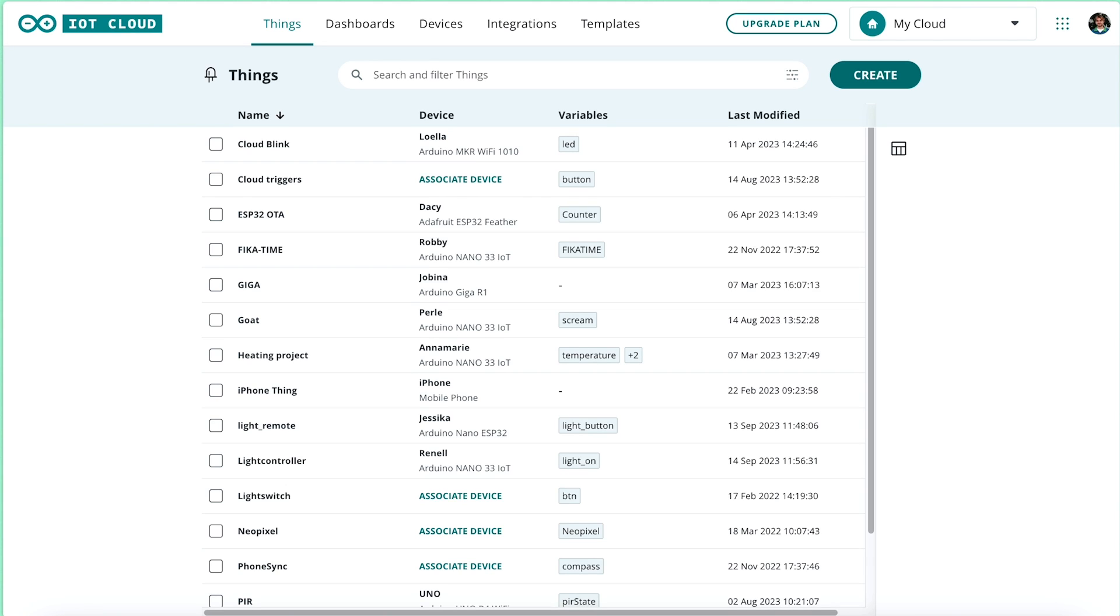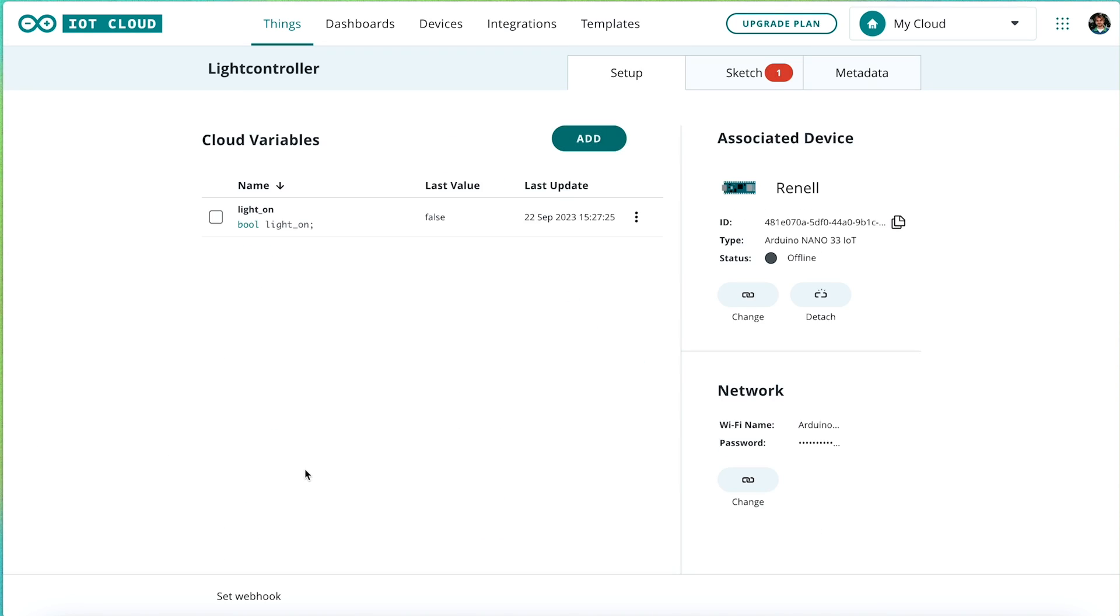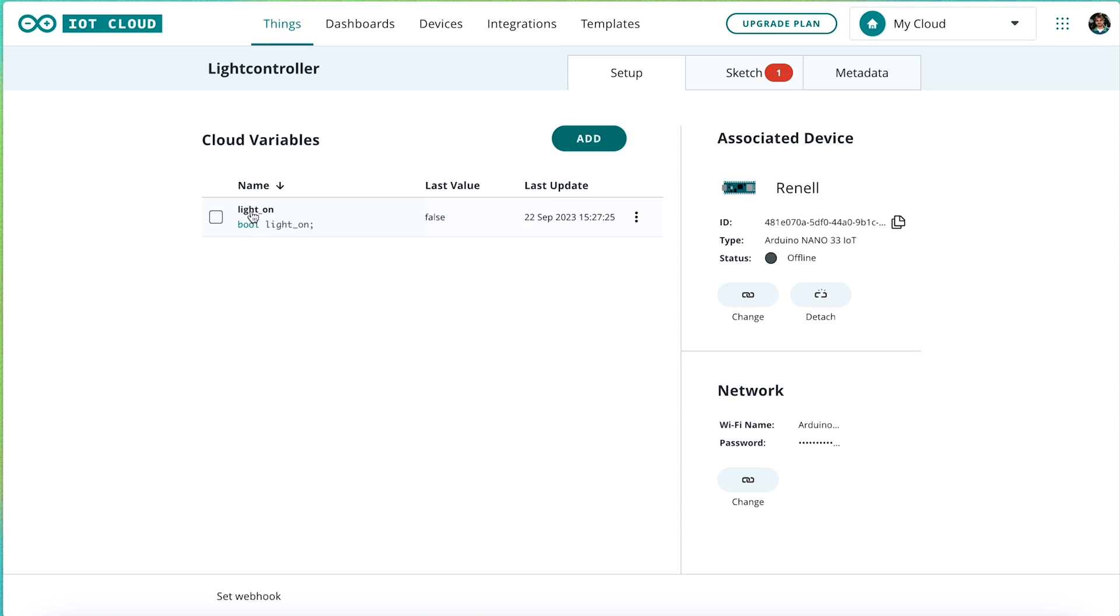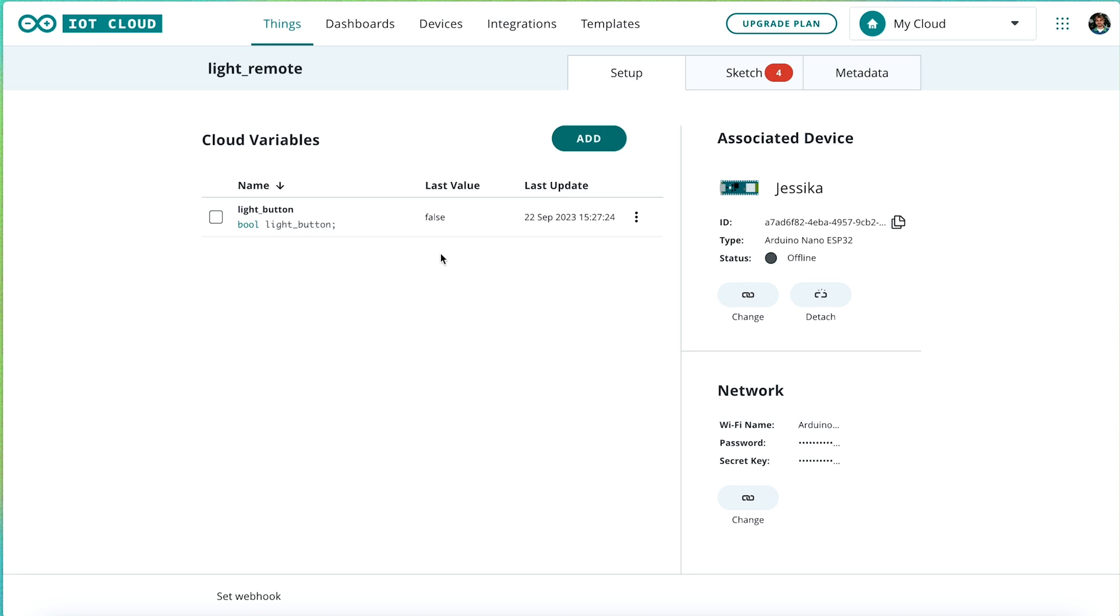If I set up two things and create a boolean variable in each, I can then click this menu when configuring my second thing and choose the boolean I set up in the first one to sync them.